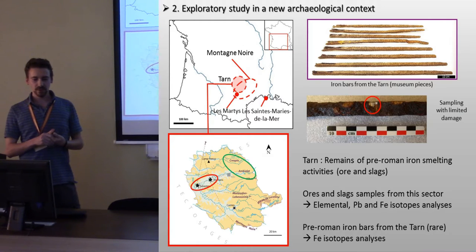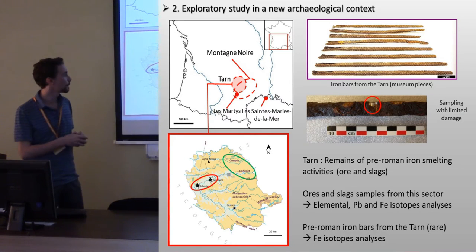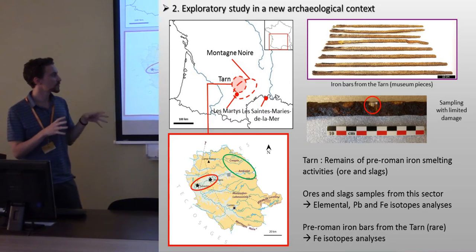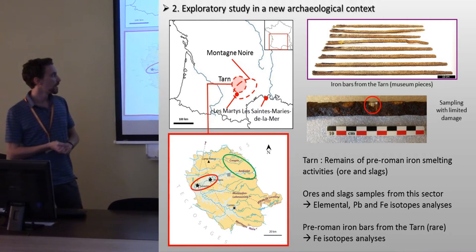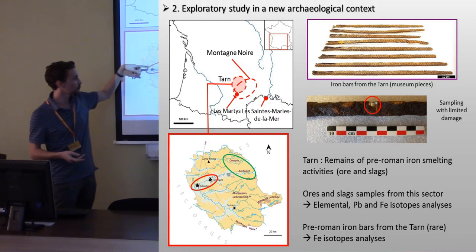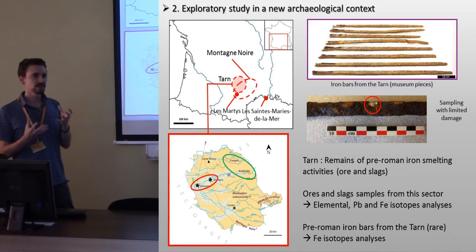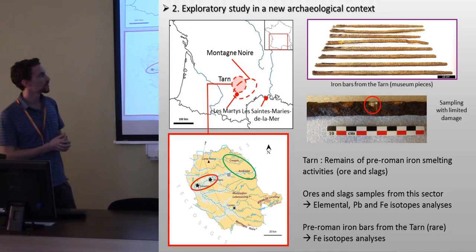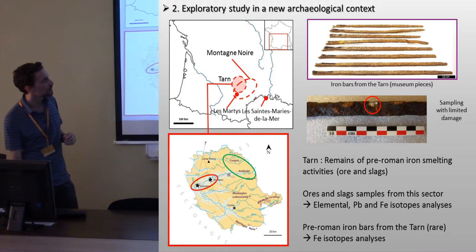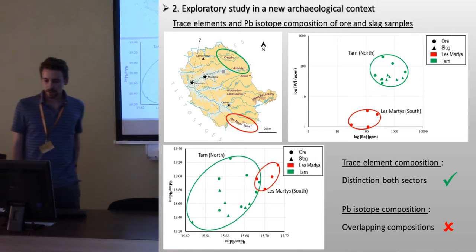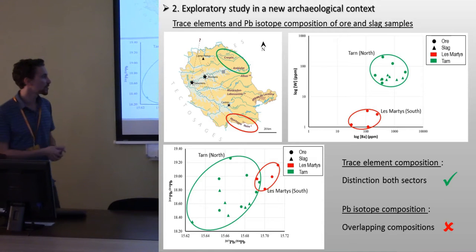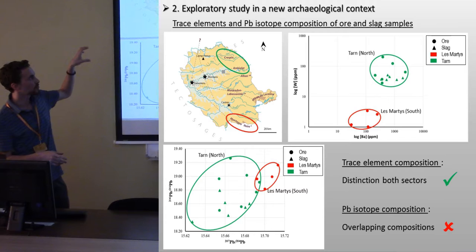We then applied this approach to the study of smelting remains in the north part of the Montagne-Noire, in the Tarn department. We collected ore and slag samples in order to compare their elemental, lead, and iron isotopic compositions. Moreover, in this sector, pre-Roman iron bars have been found. We compared the trace element composition and lead isotopic composition of materials from the north part of the Montagne-Noire, the Tarn department, and the southern part.